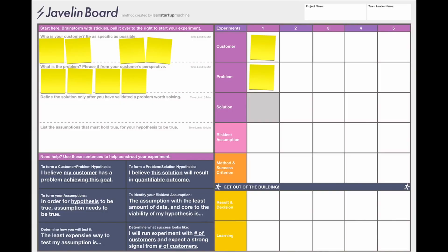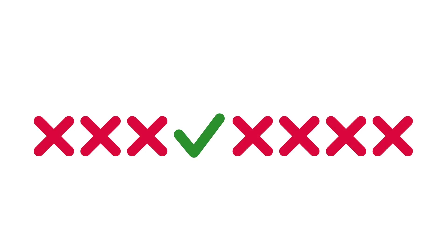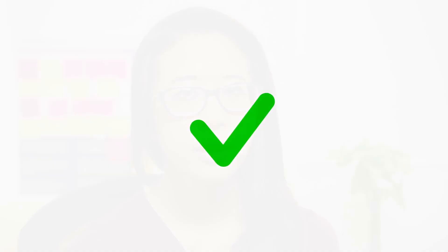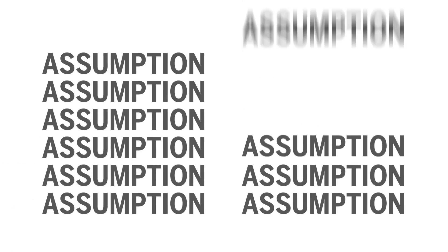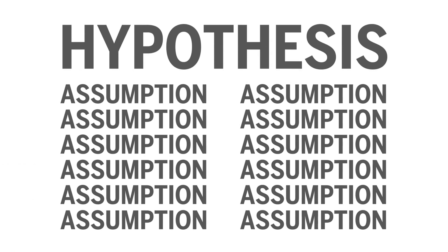You'll notice the solution box is grayed out — this is intentional. We don't want you to focus on the solution just yet. What's really important is to understand the customer and the problem and validate those first. This limits the number of variables you have to account for when starting out. The reason we start at the customer level and not the solution level is: every customer has a problem, every problem has a solution, but not every solution has a problem, and not every problem has a customer.